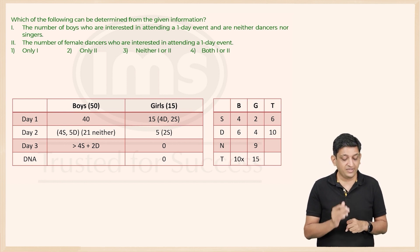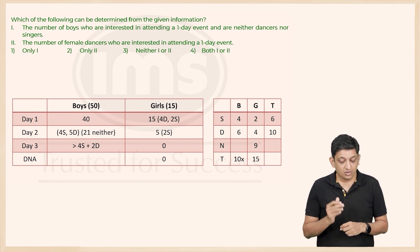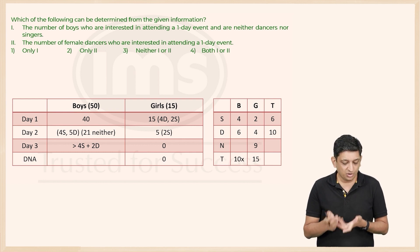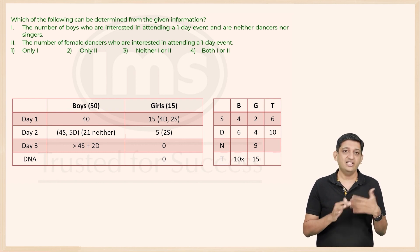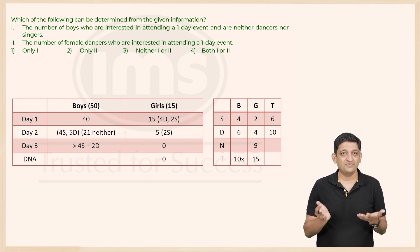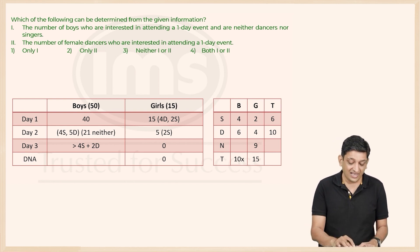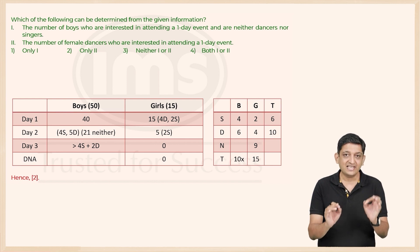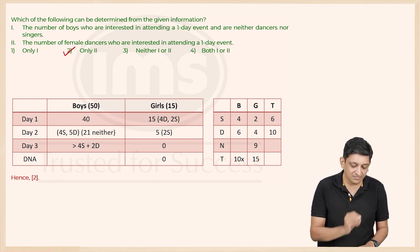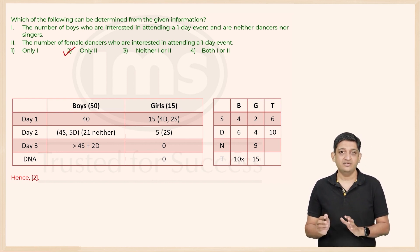For statement (b), we know all girls are interested in the one-day event and the number of female dancers is 4. So we can determine with certainty that 4 female dancers are interested in the one-day event. Statement (b) can be uniquely determined from the given data.